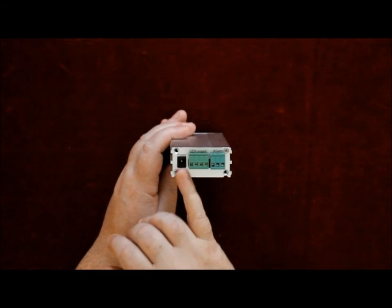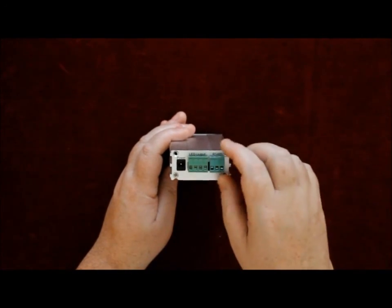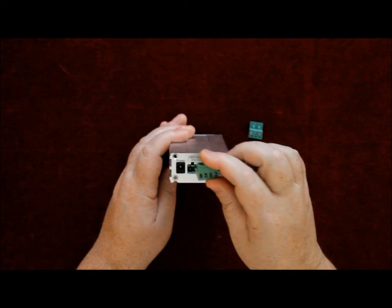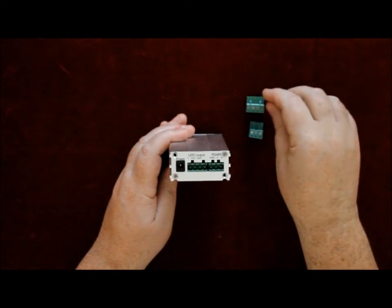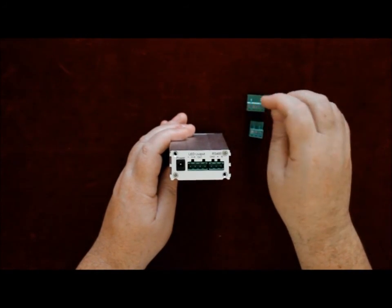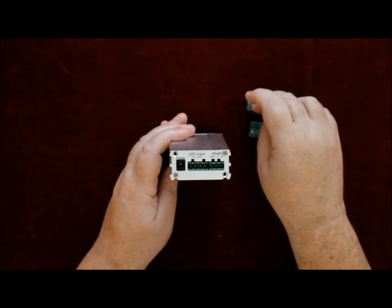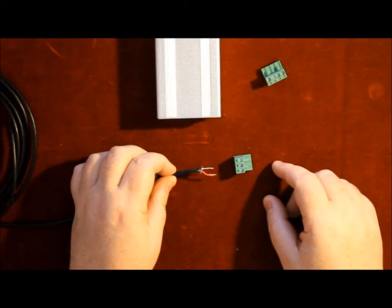On the back you will have a power jack, RS485 connector and the outputs for our LED strips, our LED pixels or our LED domes. Reading the manuals, making sure that the wires are correct and you get it all right.